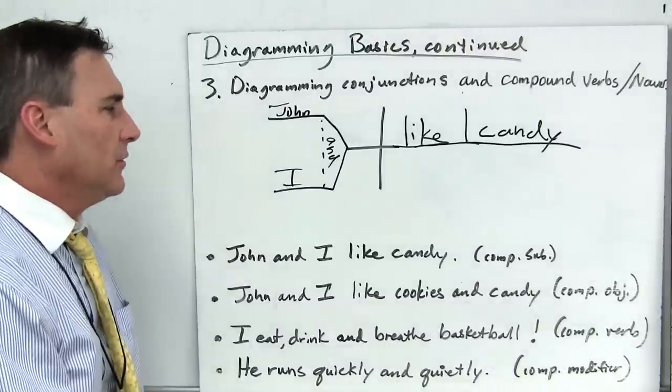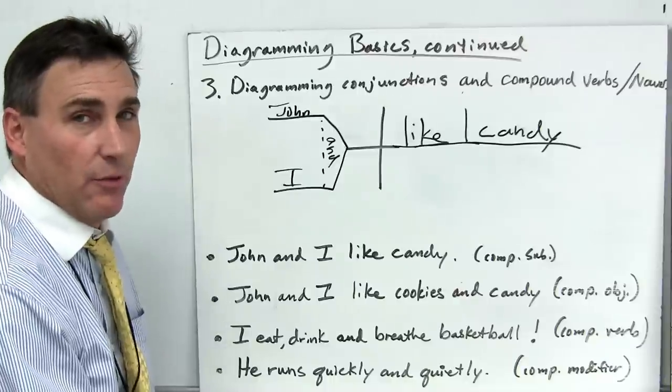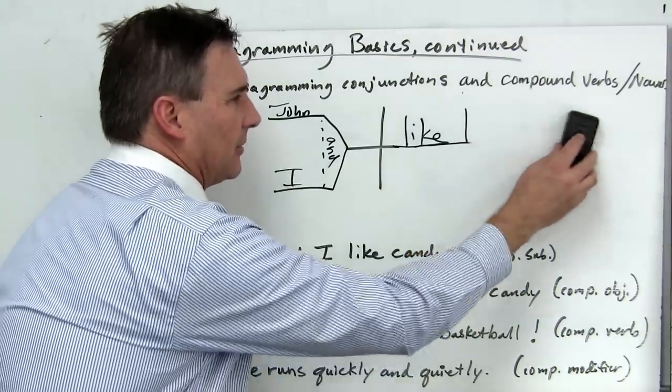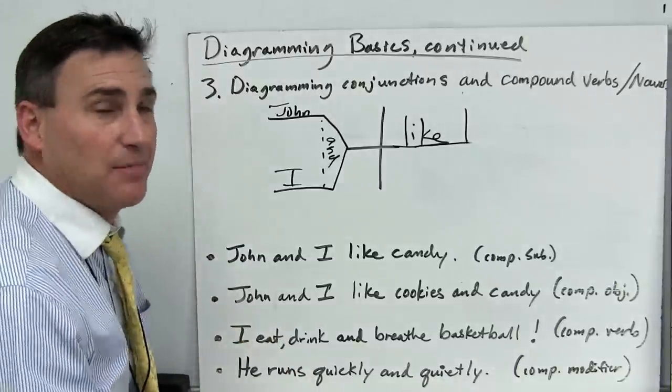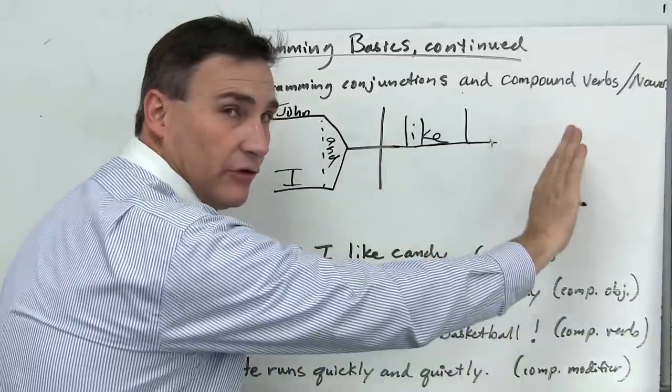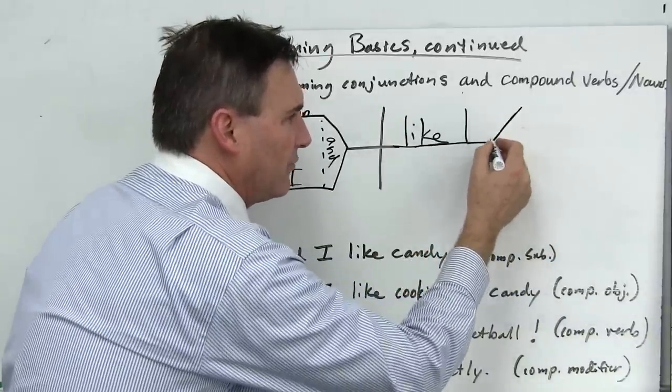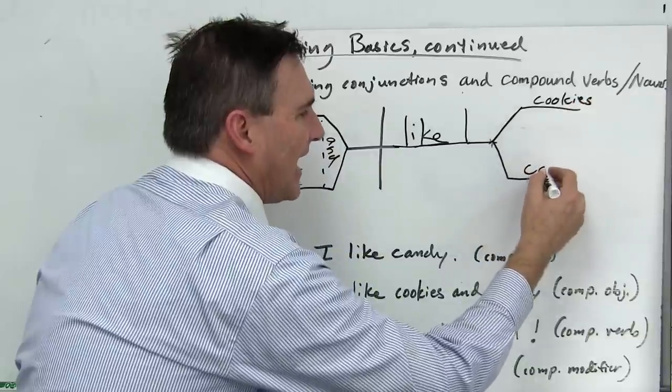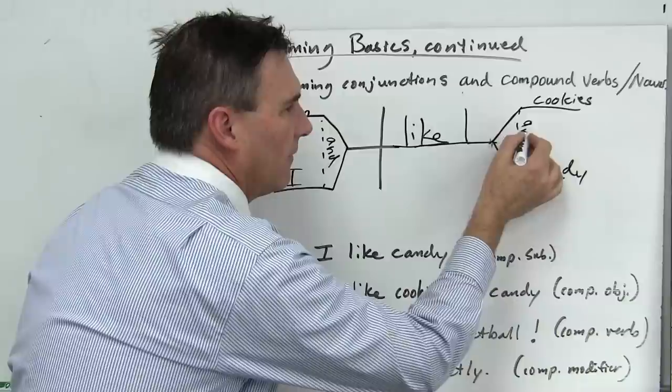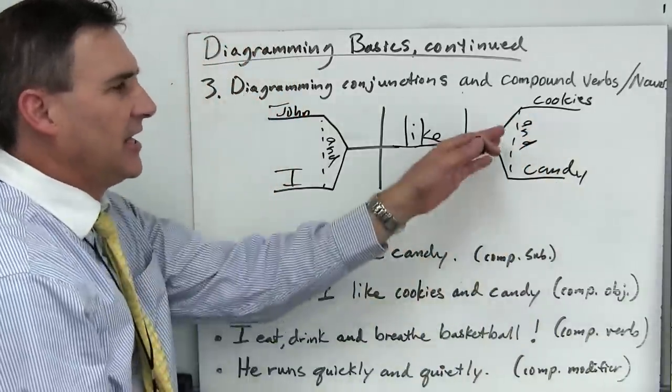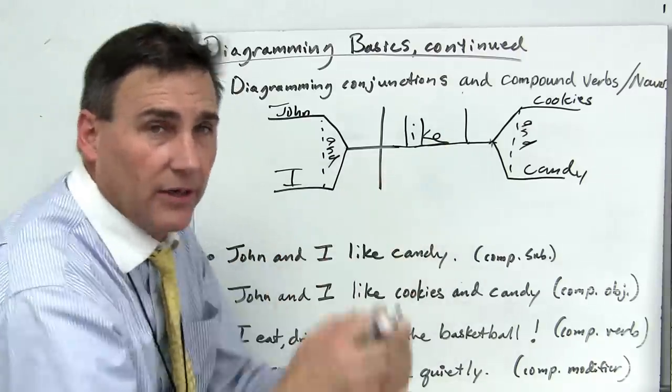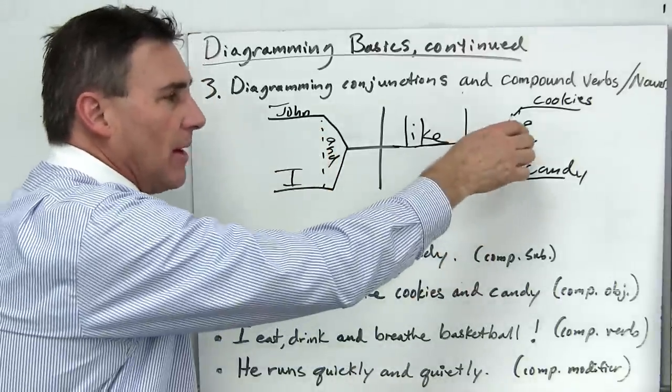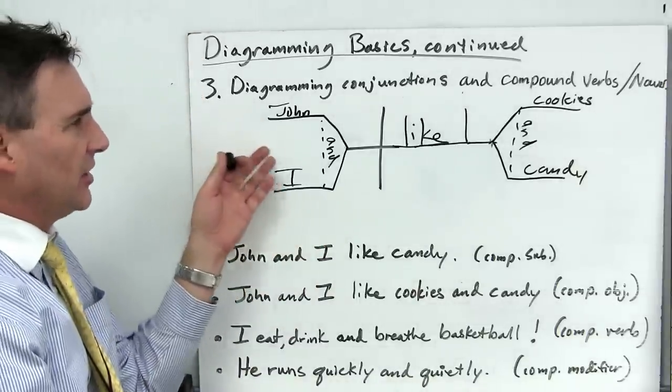Well what if we also don't want to say John and I like candy, John and I like cookies. What if we want to say John and I like candy and cookies, our second example where we have a compound object. We do the same thing here. We create room on that baseline by expanding into a bracket. We leave our vertical line that tells us whatever is over here is a direct object. But now we've got a couple of direct objects. We like what? We like cookies. And we like candy. And again we'll use and along that dotted line as the connecting conjunction. So conjunctions, because they join, will be put on a dotted line joining whatever it is they're joining. In this case, compound subjects, compound objects, nouns.